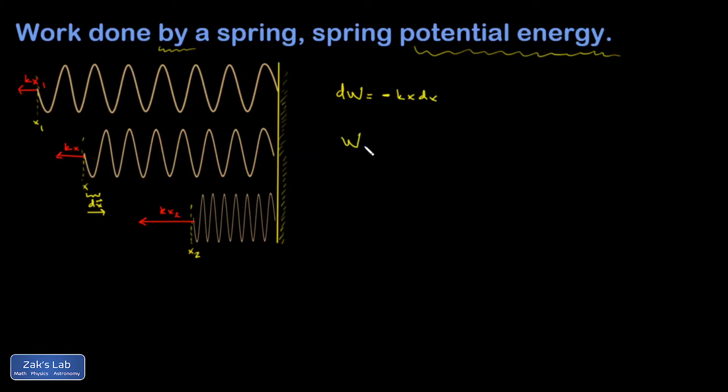Then I get the total work done by the spring. I do that by adding up all the contributions to the work. That's all integration is. And I put in my expression for dw. And then I have to look at the starting and finishing positions. So I've gone from some little squish of the spring to some big squish. The initial is x1, and the final is x2.